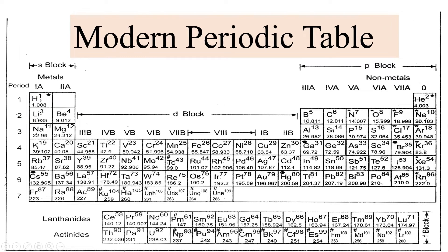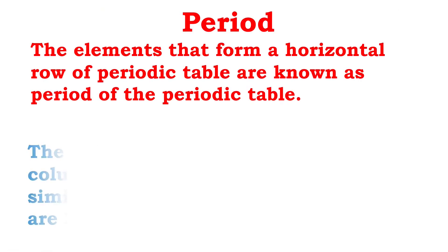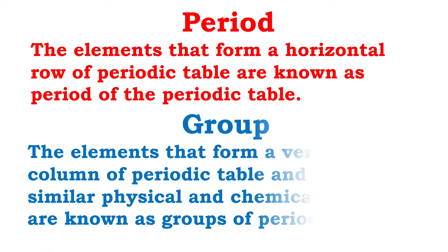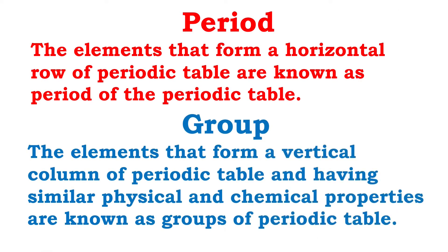Hydrogen and helium form the first period. This way we have altogether 1, 2, 3, 4, 5, 6, 7 periods in this periodic table. The vertical column represents a group, and the horizontal row represents a period.